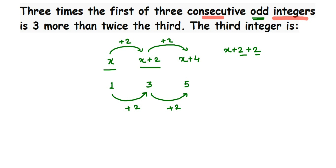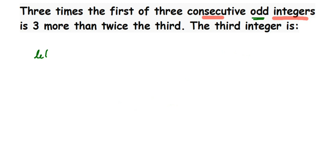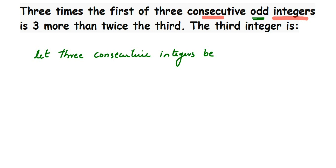Whenever there's a question about consecutive odd integers, the numbers will be x, x plus 2, x plus 4. Now we'll frame the equation. Let the three consecutive odd integers be x, x plus 2, and x plus 4. Since we're talking about integers, the answer can include negative numbers as well.